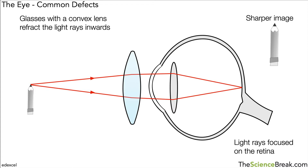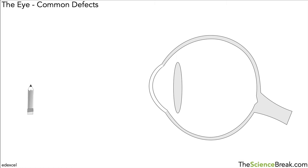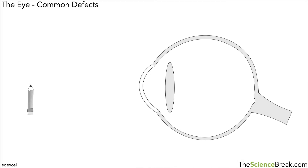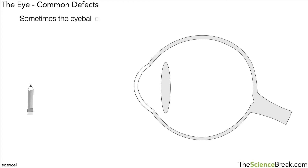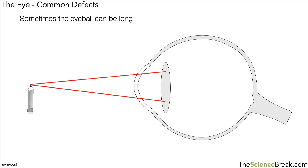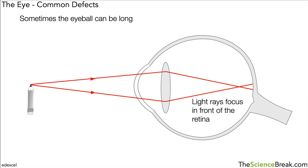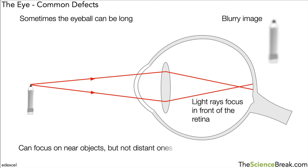Now sometimes we have the opposite problem — an eyeball that is slightly long. The light rays come off the pencil and meet the lens, but they are refracted and cross over just before they hit the retina. The light rays focus in front of the retina, so again we get a blurry image. In this case we can focus on near objects but not objects that are far away.